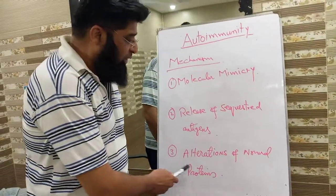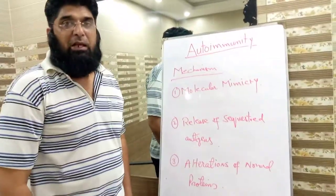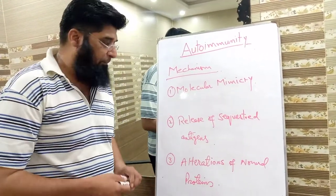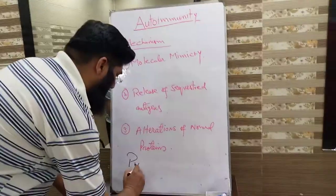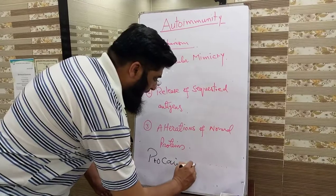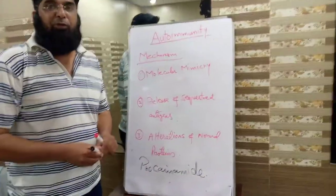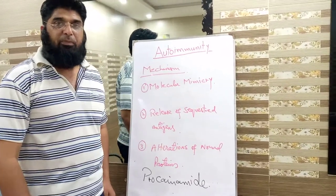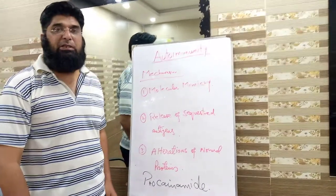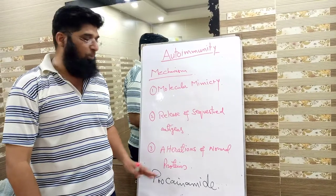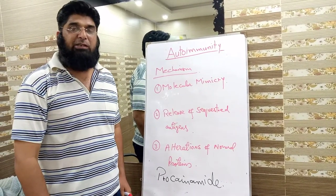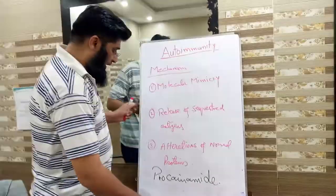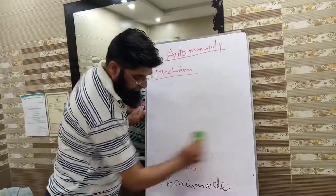The third mechanism is alteration of normal proteins. This mechanism is mostly seen with drugs, for example procainamide. Procainamide is a drug which alters the structure of normal cellular proteins; as a result these proteins become non-self for the body's immune mechanism and the body develops autoimmunity against its own antigens.